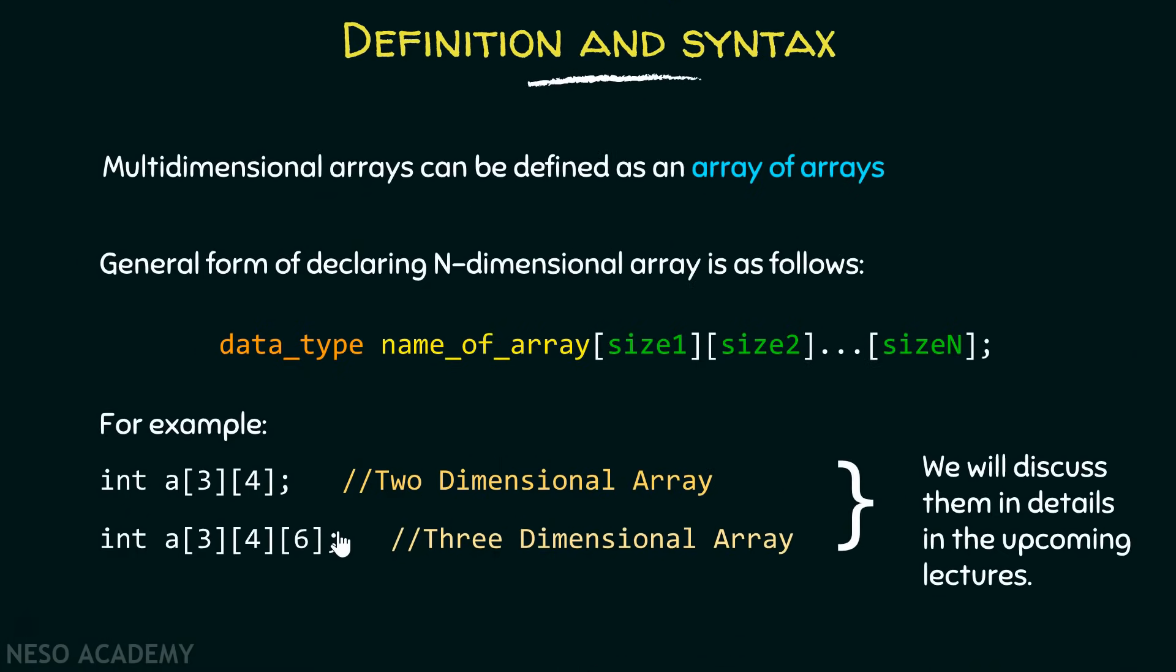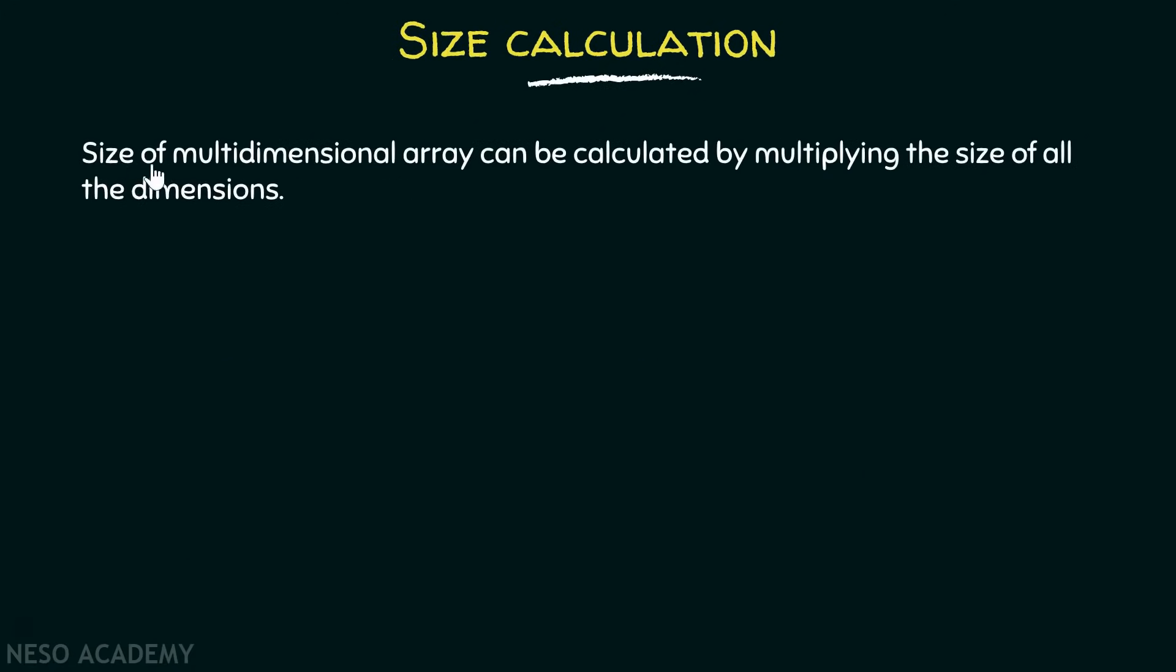After defining the multidimensional array and giving the syntax, let's now try to understand how we can calculate the size of multidimensional arrays. Size of multidimensional array can be calculated by multiplying the size of all the dimensions.